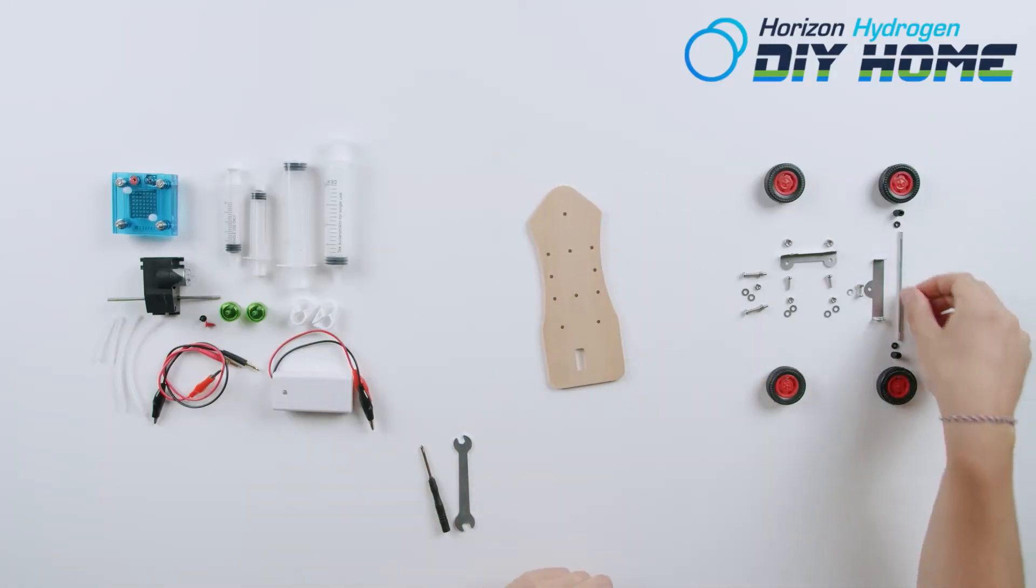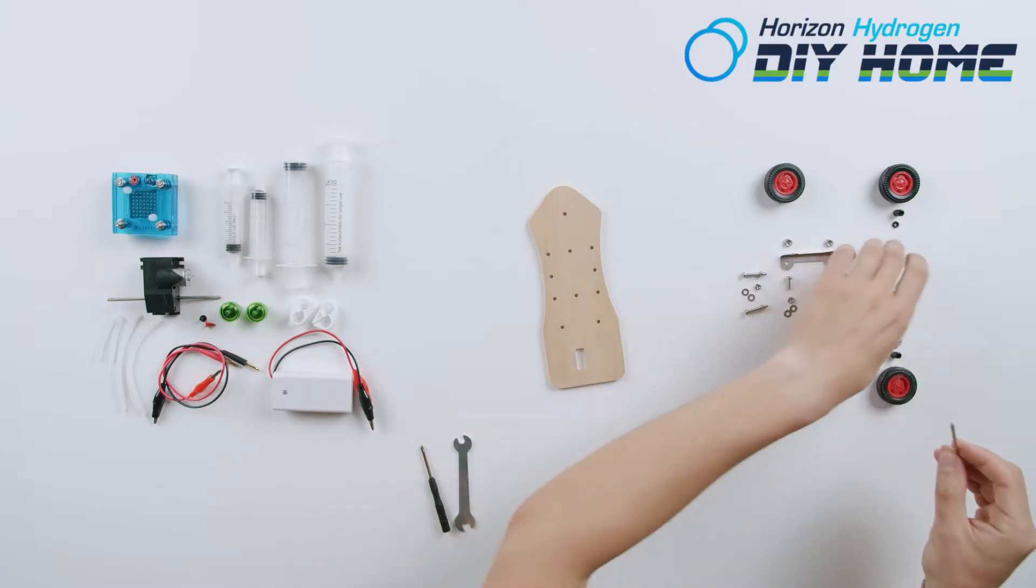Start by laying out your DIY fuel cell car parts and chassis parts. Keep them separate.